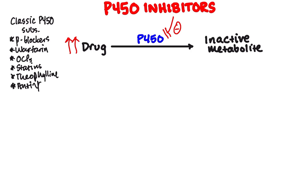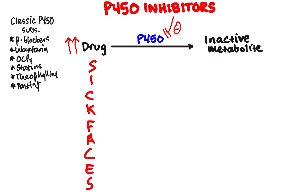The mnemonic for the P450 inhibitors is pretty long, and you're just going to need to know these drugs. The mnemonic is helpful, but as I told you in the inducer talk, there are overlaps as far as the letters in these mnemonics. So you're just going to have to remember the drugs — the mnemonic will help you, but it's not going to be enough. You're going to need to know these drugs too. The mnemonic is 'sickfaces.com', and there are two more that I want to bring up.